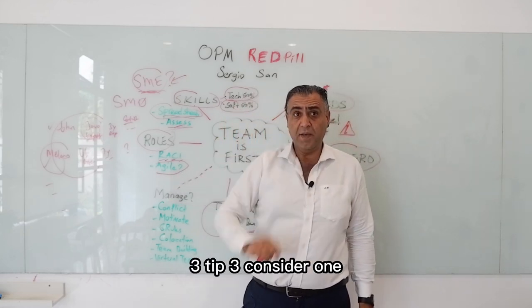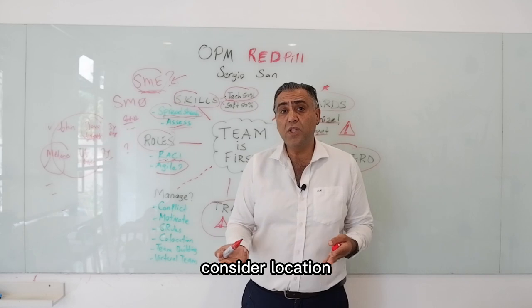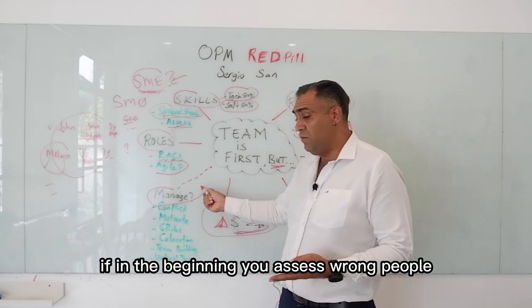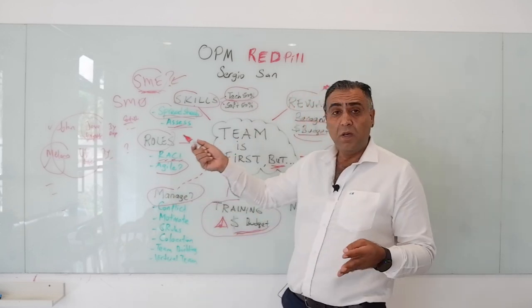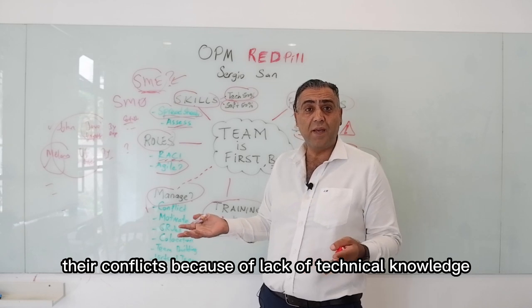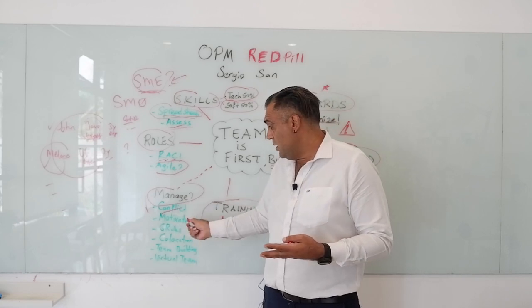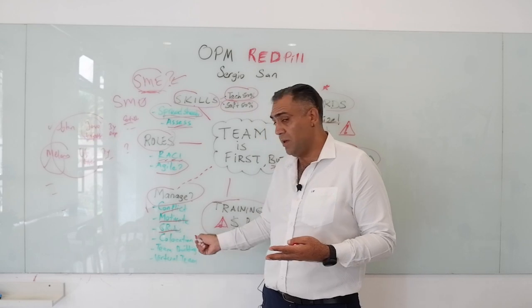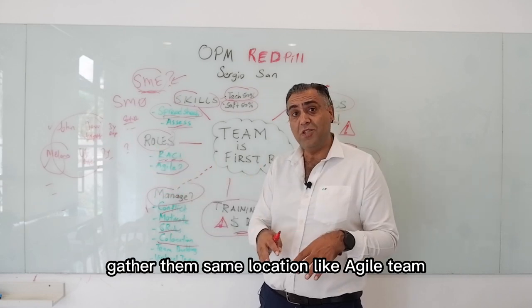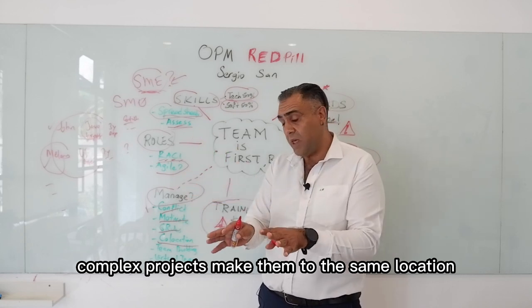Tip three: when assigning responsibilities, consider time zone, location, and communication needs — how to manage people is very effective here. If in the beginning you assign the wrong people or wrong skills to your project, you cannot manage their conflicts — whether due to lack of technical knowledge or lack of soft skills. Co-location: gather them in the same location, like in Agile. For complex projects, make them be in the same location — this is a technique for managing the team.